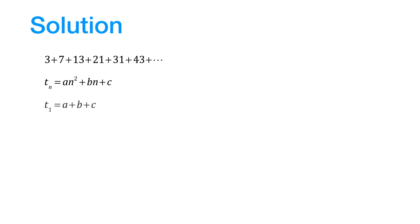So let us put n equal to 1. That gives us the first term, but the first term is equal to 3. So, we get this equation. Let us now put n equal to 2 to get the second term, but the second term is 7. So, we get this.